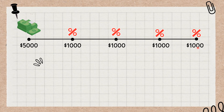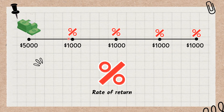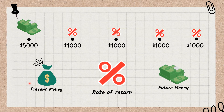The discount rate is a key factor in calculating the present value of an annuity. It is an assumed rate of return or interest rate that is used to determine the present value of future payments.